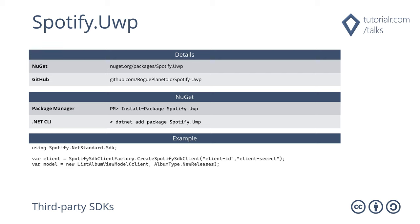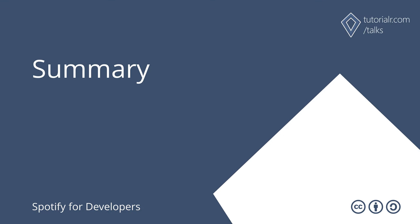Spotify.uwp extends Spotify.NET Standard.SDK by adding dedicated support for Universal Windows platform applications, including lists as observable collections to support incremental loading, allowing for infinite scroll. It is available on NuGet and supports Windows 10 Fall Creators Update from 2017 or later, with full source code, unit tests and documentation available on GitHub. Spotify for Developers allows developers to create their own Spotify-powered experiences.